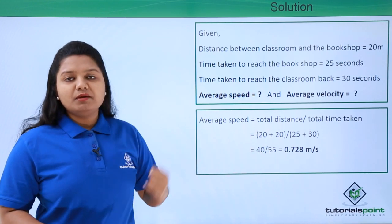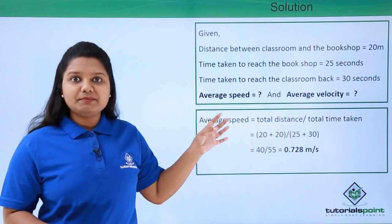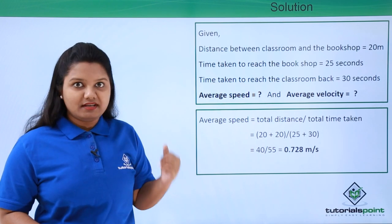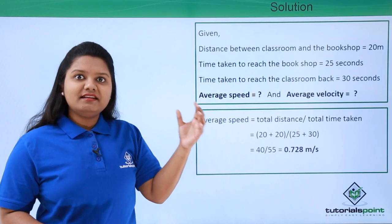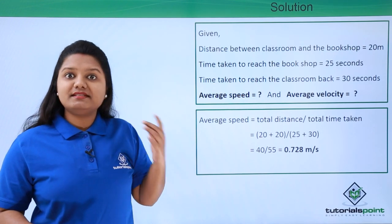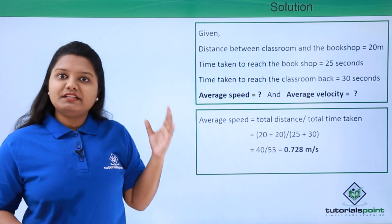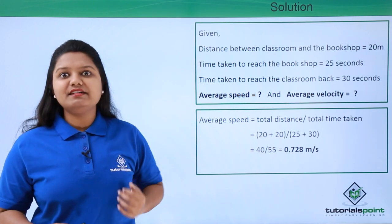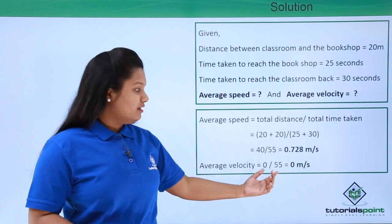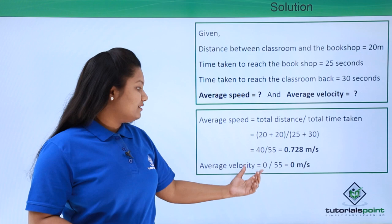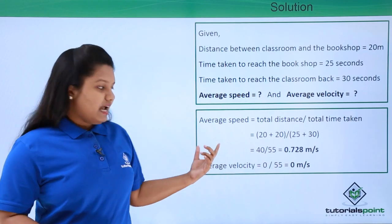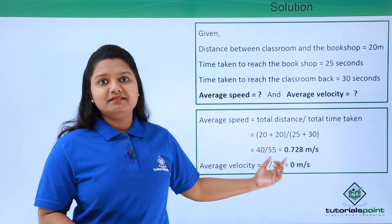Now, for average velocity, we look at the displacement. Since the boy started his journey from the classroom and at the end returned to the classroom, his initial and final points are the same, making the displacement 0. Average velocity equals total displacement divided by total time, which is 0 divided by 55 — giving 0 meters per second. So the average velocity of the boy is 0.